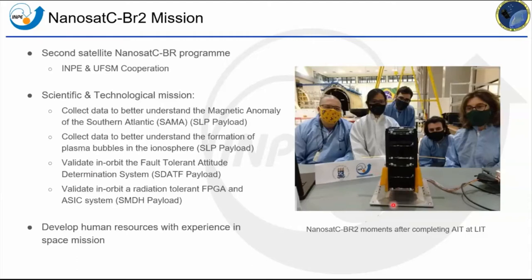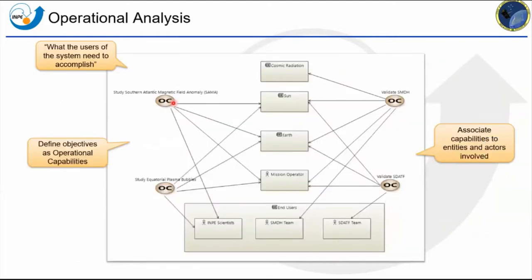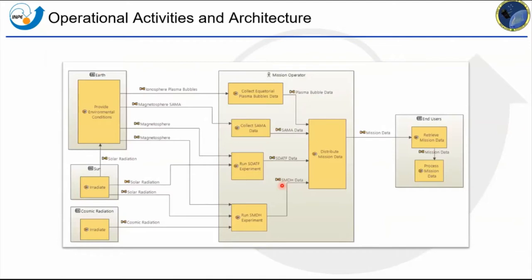Here you can see the NanoSat CBR2 shortly after we finished assembly, integration, and testing at our facility at INPE. We begin with the operational analysis as the Arcadia method prescribes. The objective is what the users of the system need to accomplish, so we define objectives as operational capabilities and associate them with the entities and actors involved. For example, when studying equatorial plasma bubbles we have the Sun, Earth, end users, and mission operator. We define the set of operational activities and allocate them to each actor and entity, defining interfaces between them.